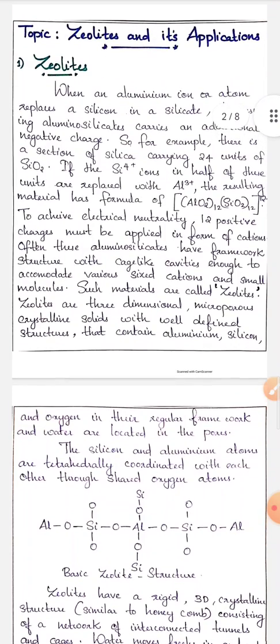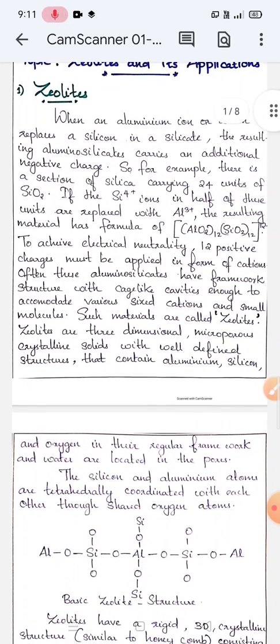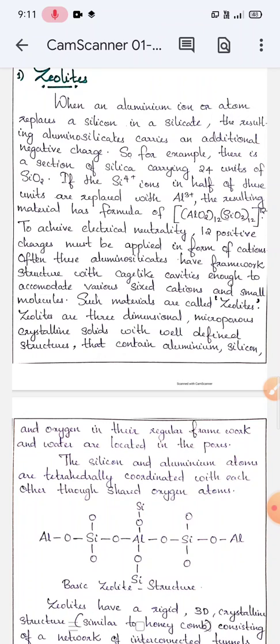Let me explain more. When an aluminum ion or atom replaces a silicon in a silicate, the resulting aluminosilicate carries an additional negative charge. For more convenience, we can take an example.